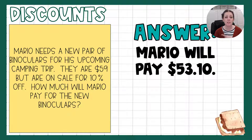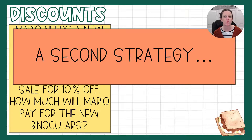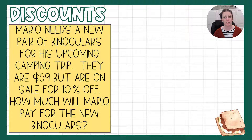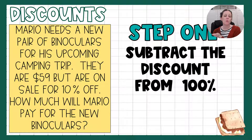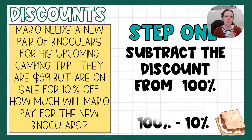Just like with sales tax and tip, there's a second strategy. I'm going to go ahead and show you that one, and then you can pick the strategy that makes the most sense to you. Same problem — Mario is buying these binoculars, they're $59, but they're 10% off. Step one is to subtract the discount from 100%. When we did sales tax and tip, we talked about how they're going to pay 100% of that original cost plus whatever percentage the tax or the tip is. In this case, they're not actually paying 100% of the cost because it's on sale — they're paying 100% minus the 10% discount. So we're going to subtract.